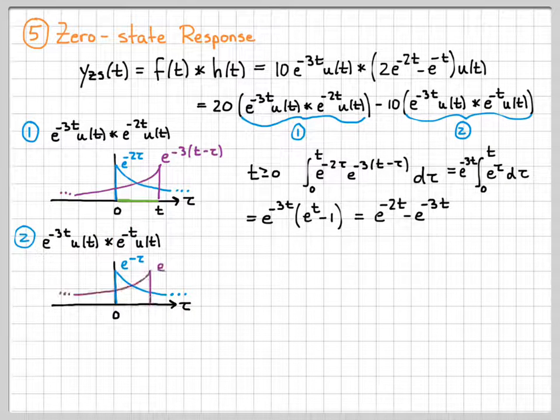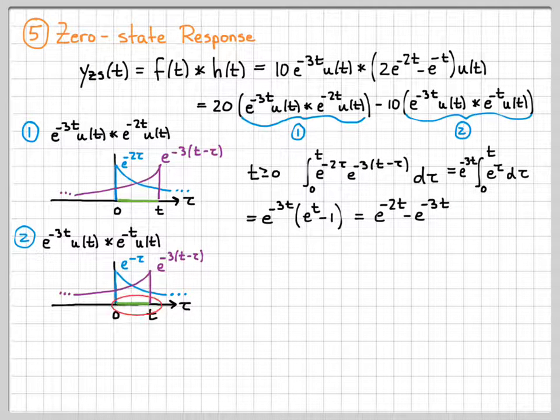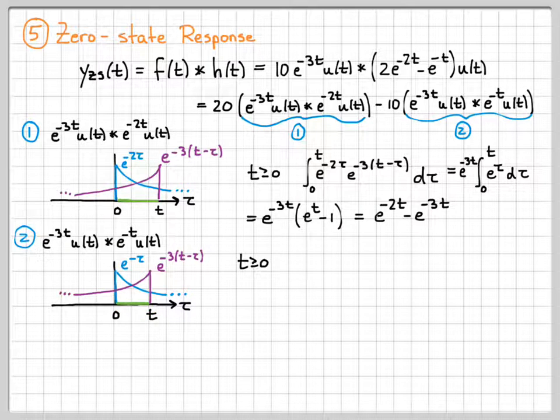And then my other signal looks just like it did before. After I flip it and shift it, where it turns off now is at time t. It used to turn on at the origin. Now it turns off at time t due to the reversing and shifting. So like before, when t is less than zero, there's no overlap, so I get zero. When t is greater than or equal to zero, they overlap in this green region. So I just need to integrate up that area.